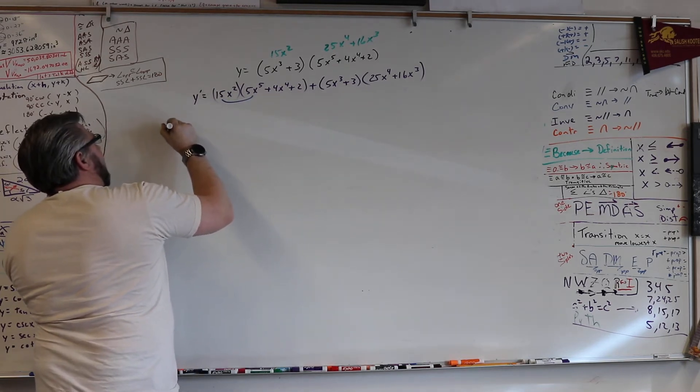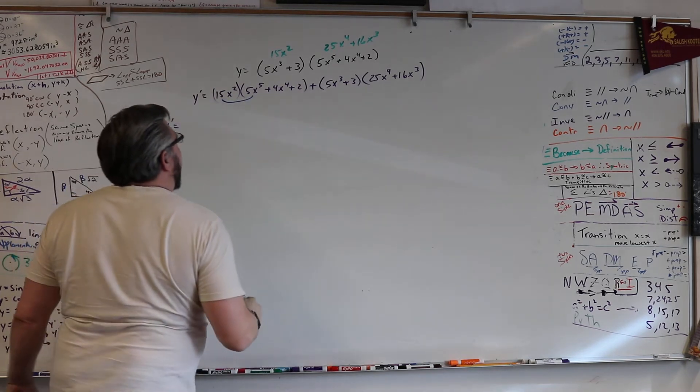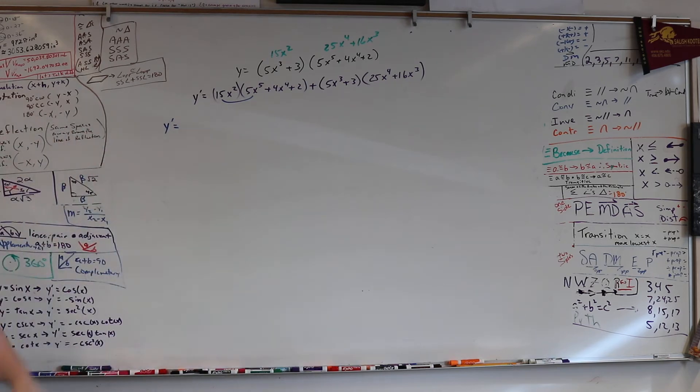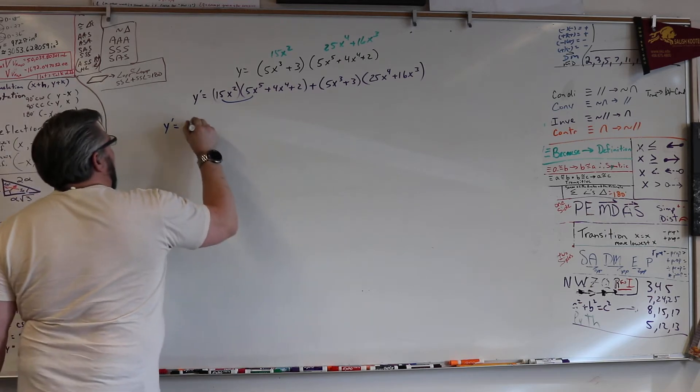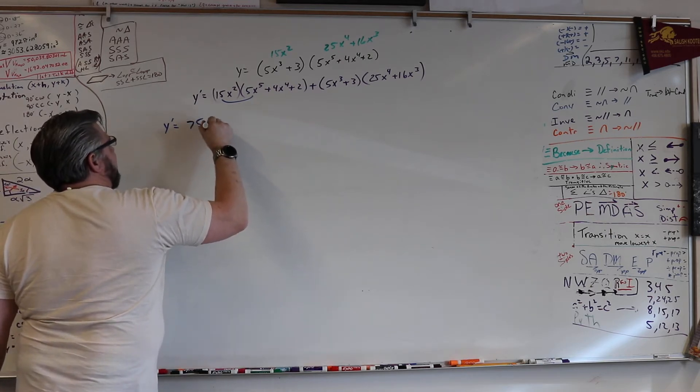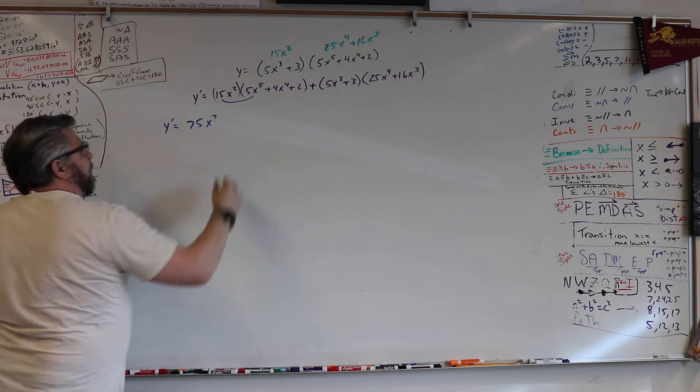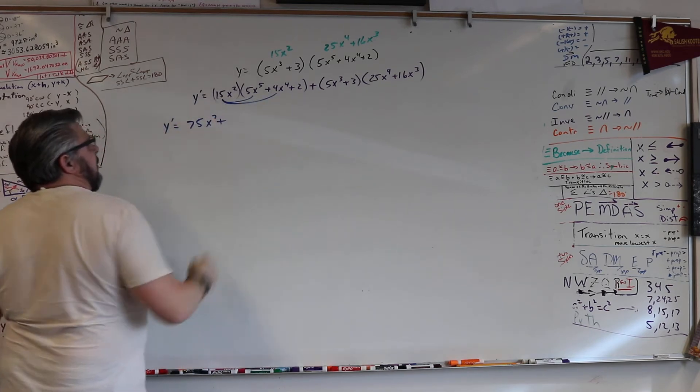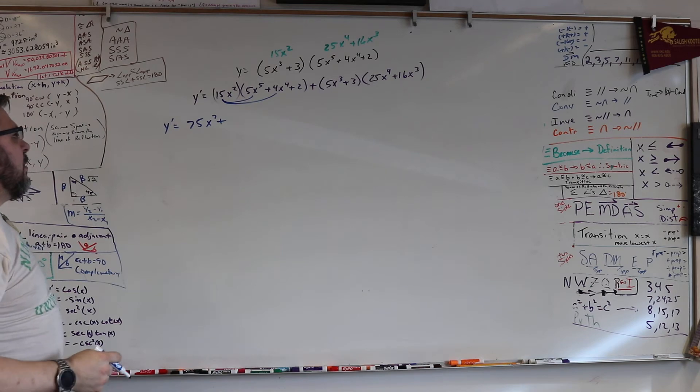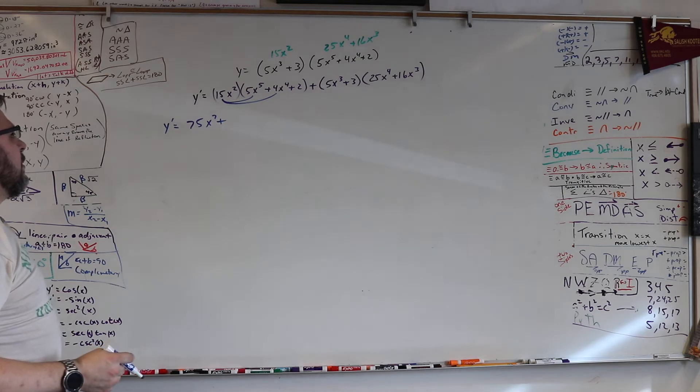What is 15 times 5? It's 5 15's. Well, 4 was 60, so 5 would be 75. So we got 75x to the 7th. Right? And then... Oh, wait. Wait, wait, wait, wait. What, what, what? Oh, I wrote 4 instead of 5. You keep going. You keep going, boss.